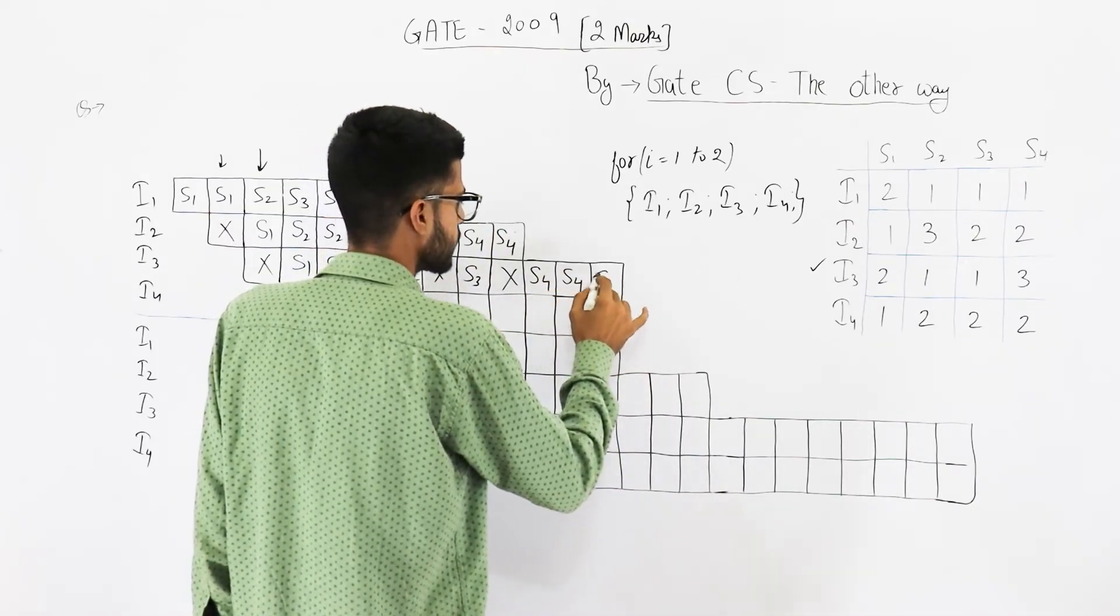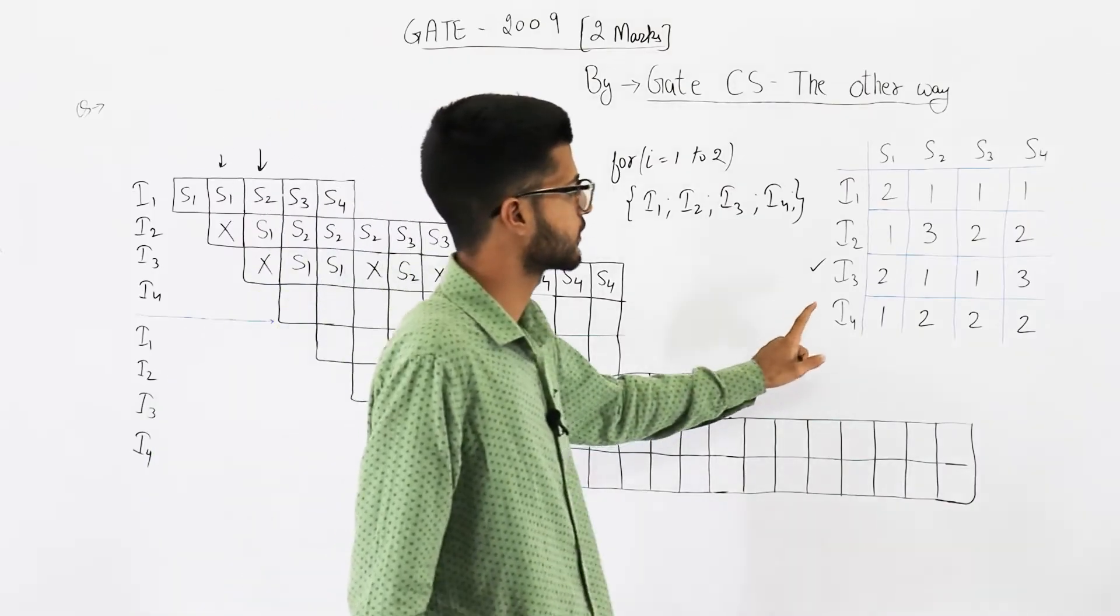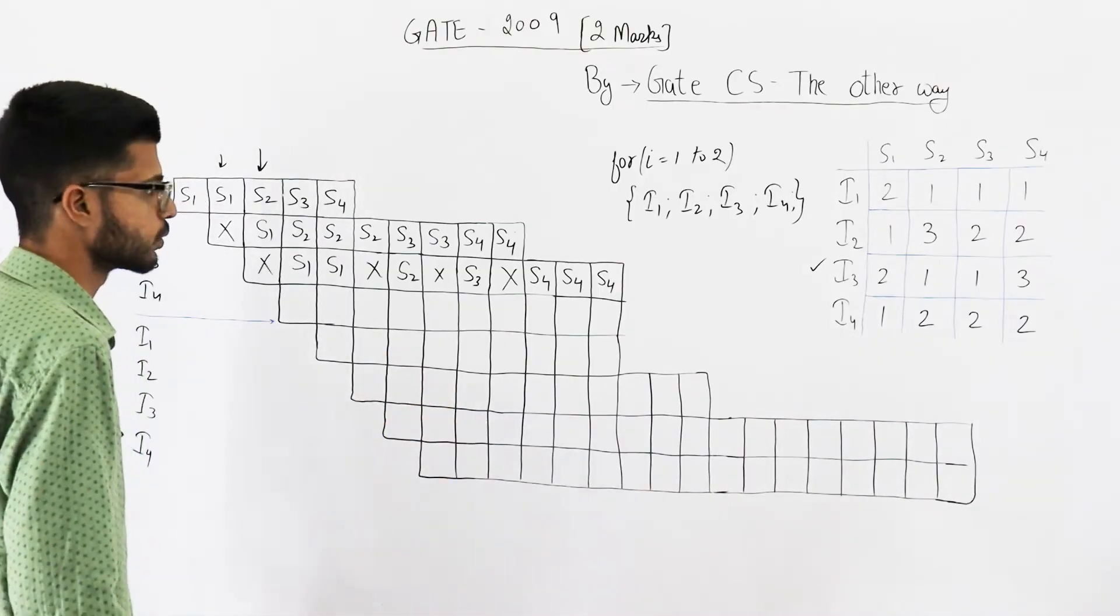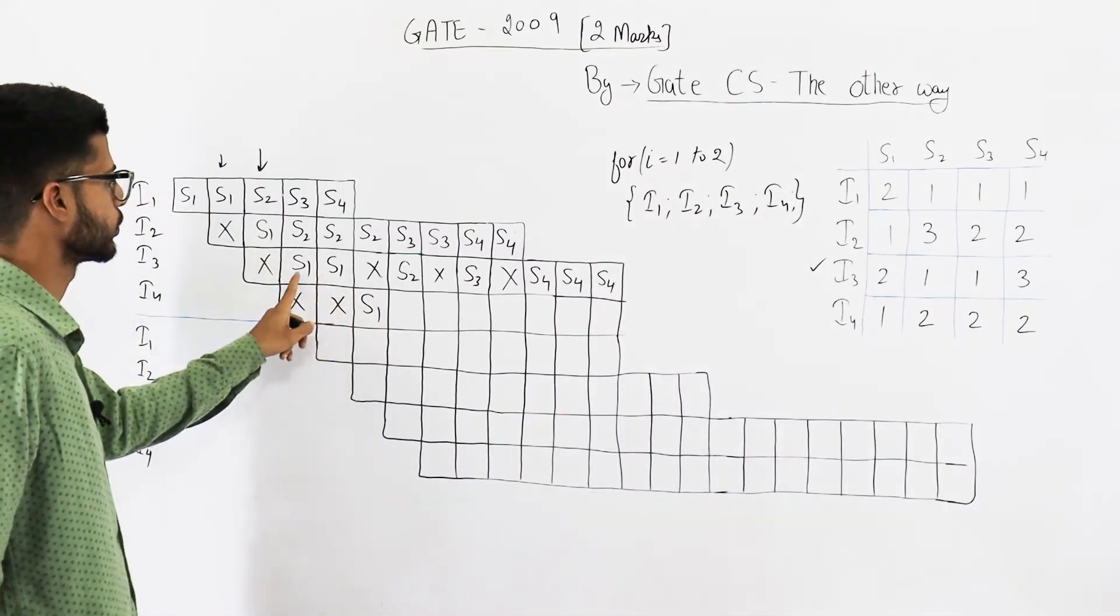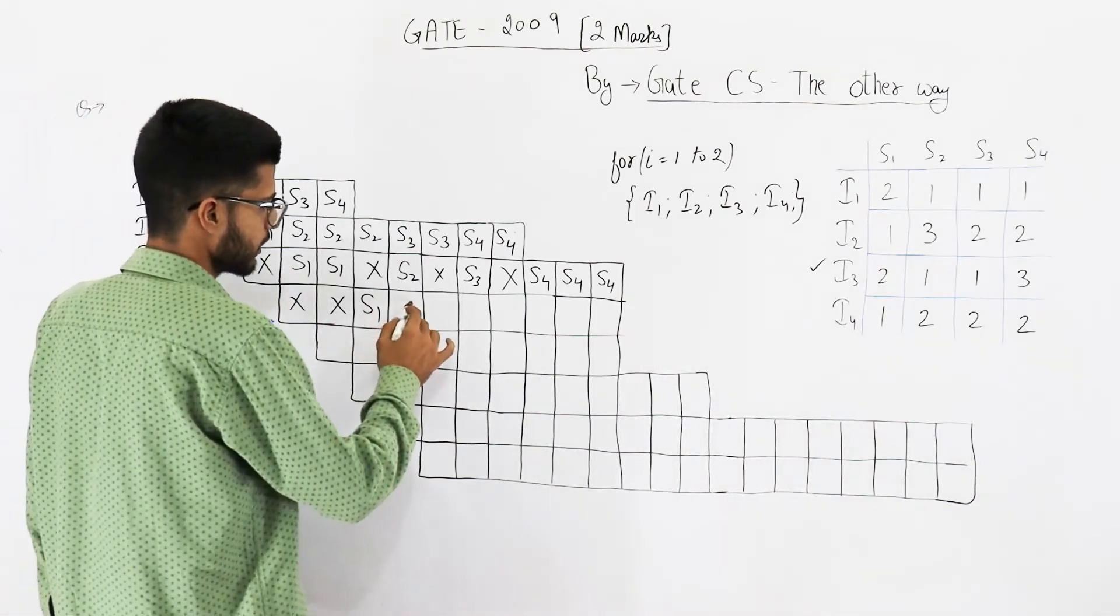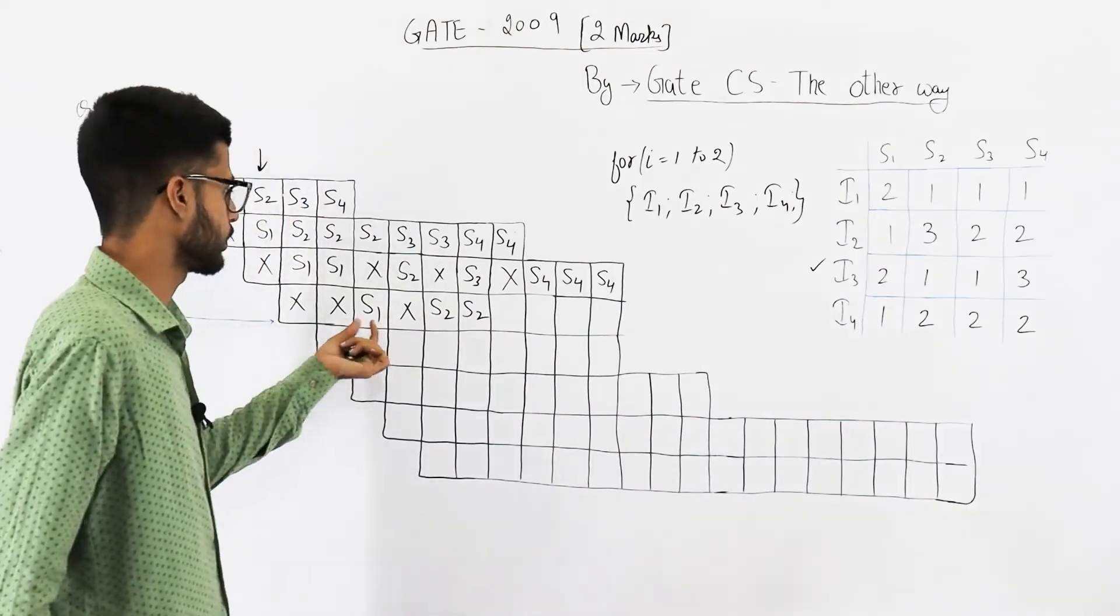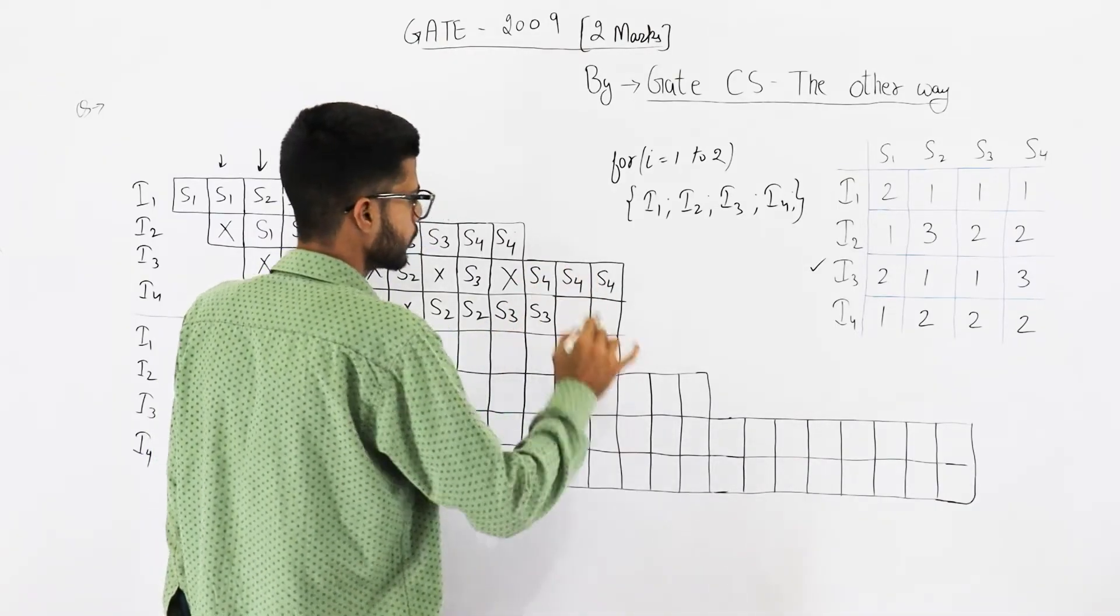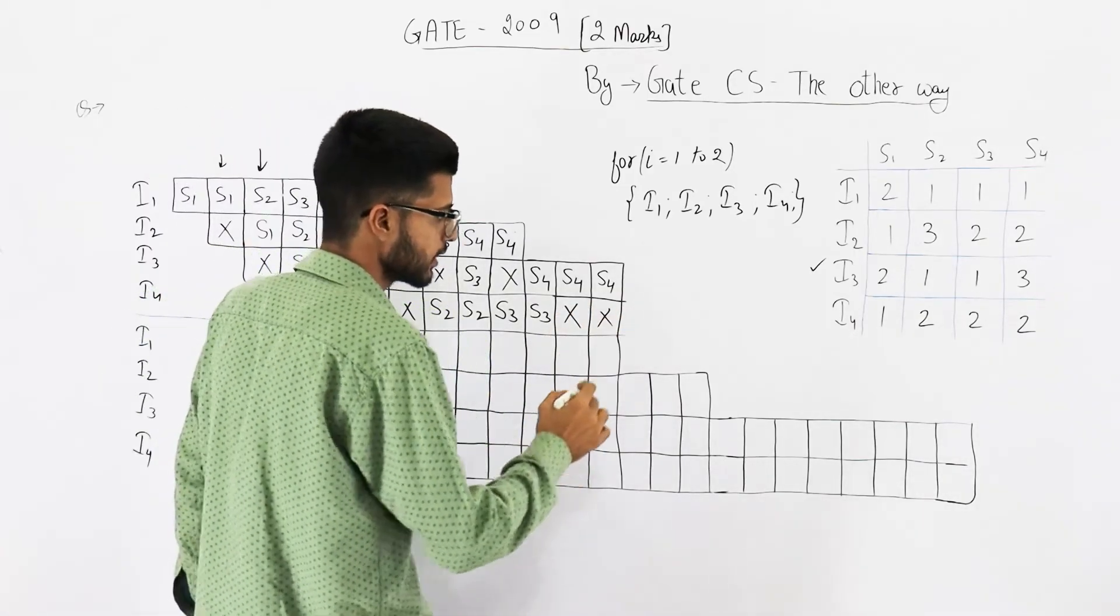This is again going to be stall because s4 is already written here. Now three clock cycles of s4, and with this instruction number three is also completed. Now let's try instruction number four: one s1, then s2, s3, s4 each of them require two clock cycles. One s1 will be started from here because both of these are s1s, so we cannot write s1 here. Then s2 can't be written here because of this s2.